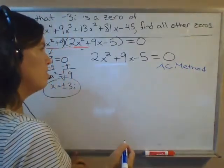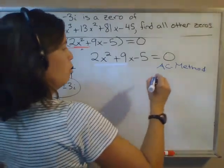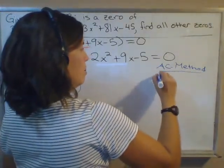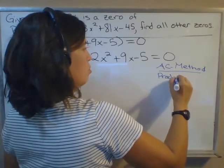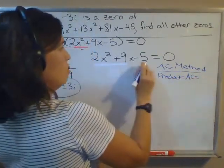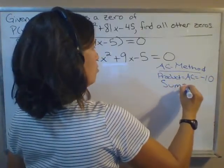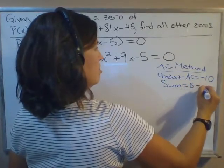When we do this, we start out by looking for two numbers whose product equals A times C, which in this case is 2 times -5, so -10, and whose sum is equal to B, which is 9.